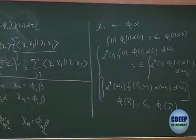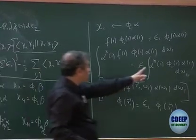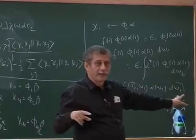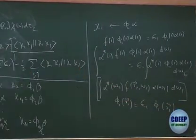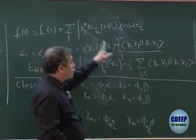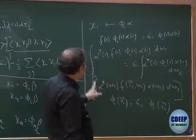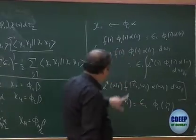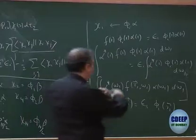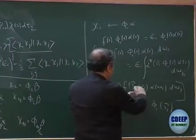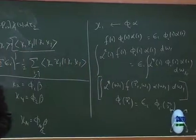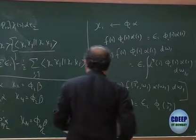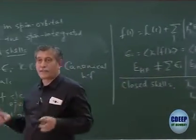The right-hand side is trivial because alpha*(omega_1) alpha(omega_1) integrates to 1, so it just gives epsilon_i phi_i(r_1). On the left-hand side, f depends on spin orbitals so I cannot take it outside the spin integration — the integration must involve f. However, phi_i(r_1) can be taken outside, giving a new operator acting on phi_i(r_1) equals epsilon_i phi_i(r_1). This is a new eigenvalue equation with an operator in r only.